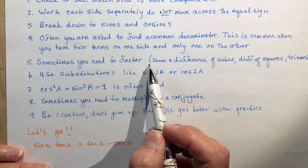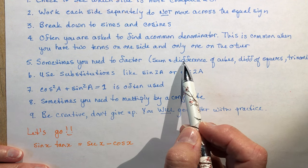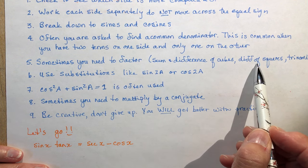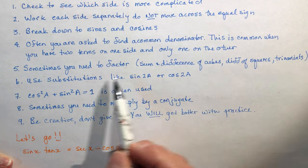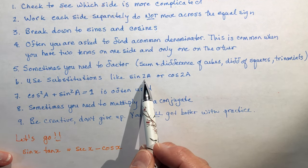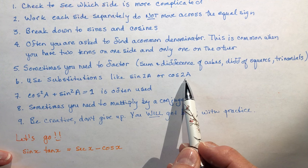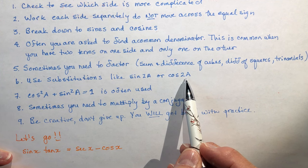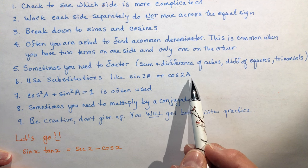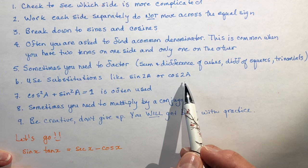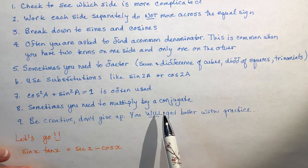Sometimes you need to factor. Oh yeah, sum and difference of cubes, difference of squares, and sometimes just a basic trinomial. You should use substitutions like sin 2a that you've learned or cos 2a. Sometimes you have to expand like the sine of x plus y. You might have to expand that using all these little tools that we've learned in the last couple of sections.